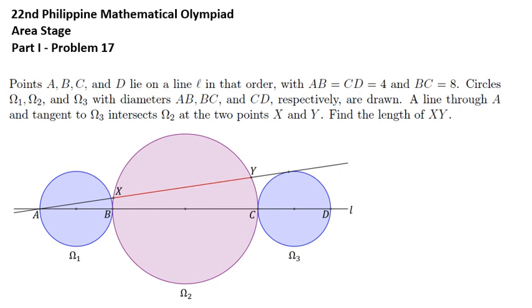Let's solve this problem taken from the 22nd Philippine Math Olympiad. Points A, B, C, and D lie on a line L in that order, with AB equals CD equals 4 and BC equals 8.